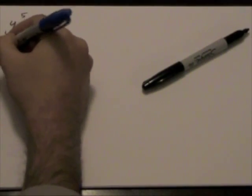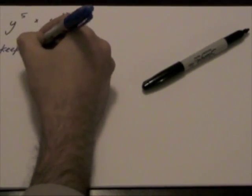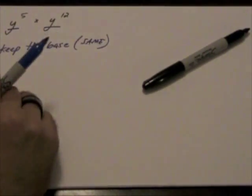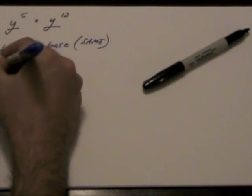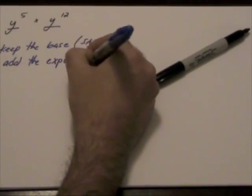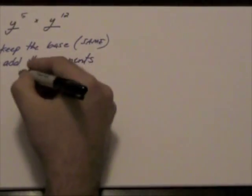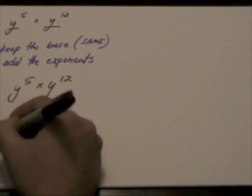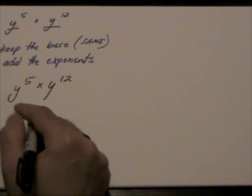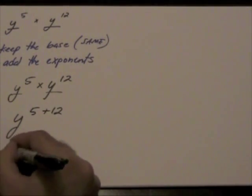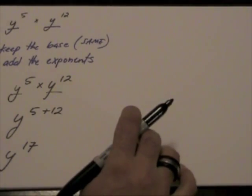we keep the base, and remember the base must be the same. What we do is add the exponents. So y to the power of 5 times y to the power of 12, we keep the base which is y and add 5 plus 12 to give us y to the power of 17.